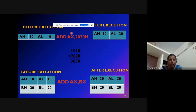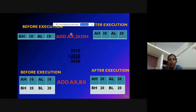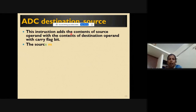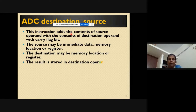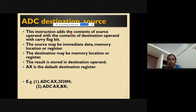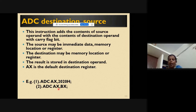Next we go to ADC — addition with carry. It is the same as addition, but you also check the carry flag. If the carry flag is 1, it is added with the result as well. If the carry flag is 0, you simply store whatever result you got. The syntax is ADC destination, source, for example ADC AX, 2020h.